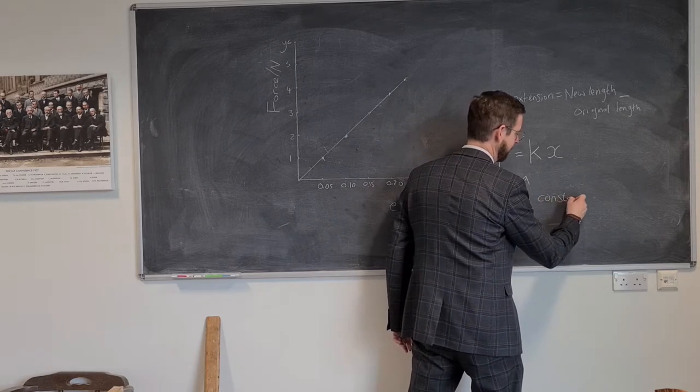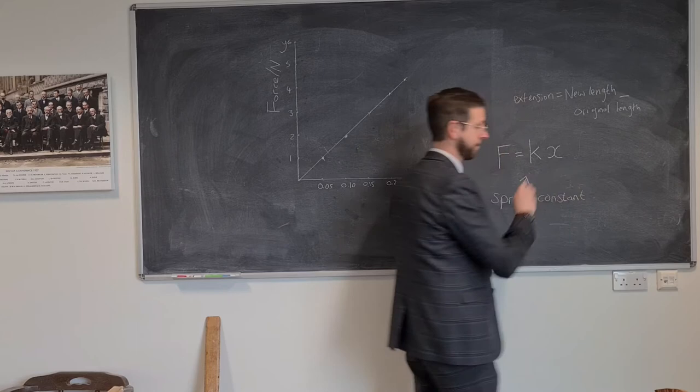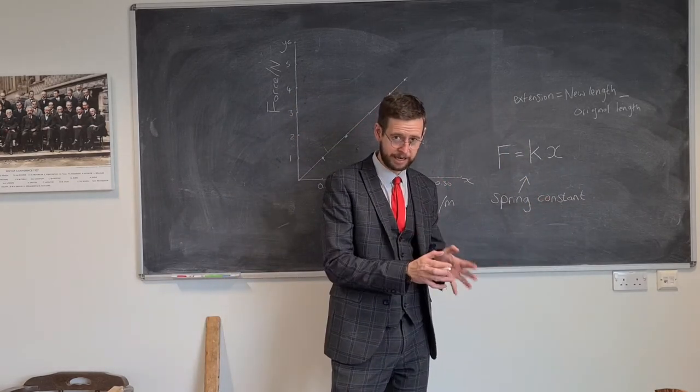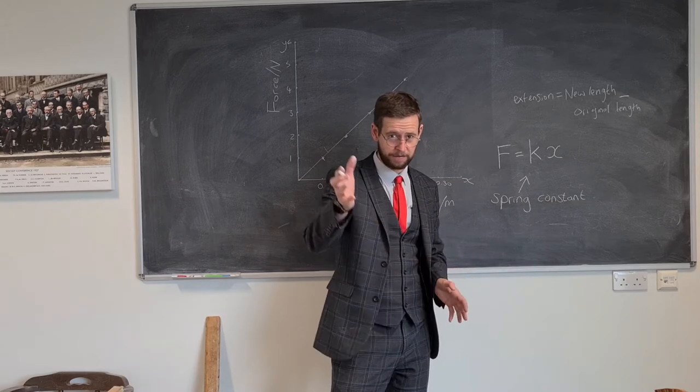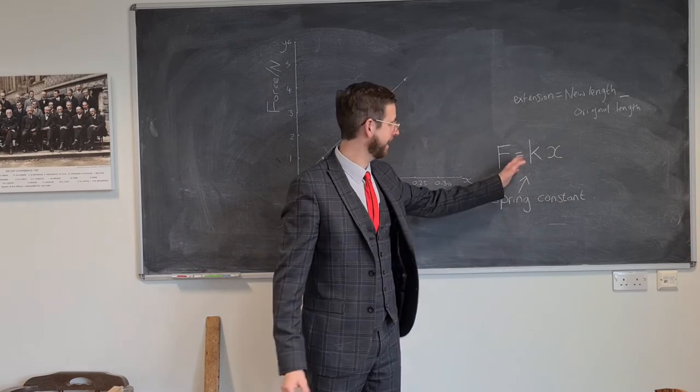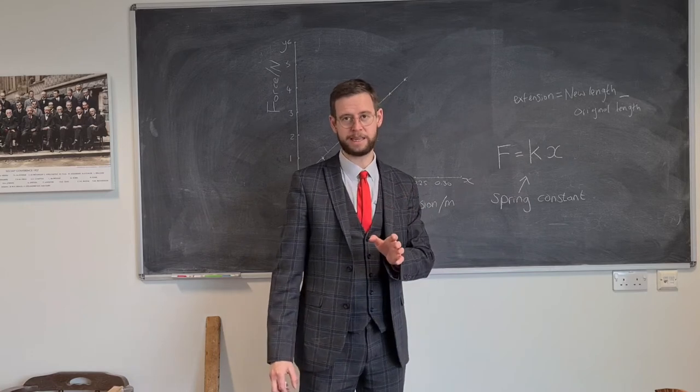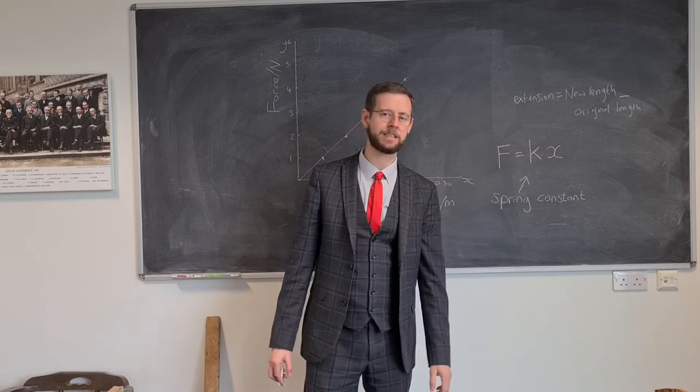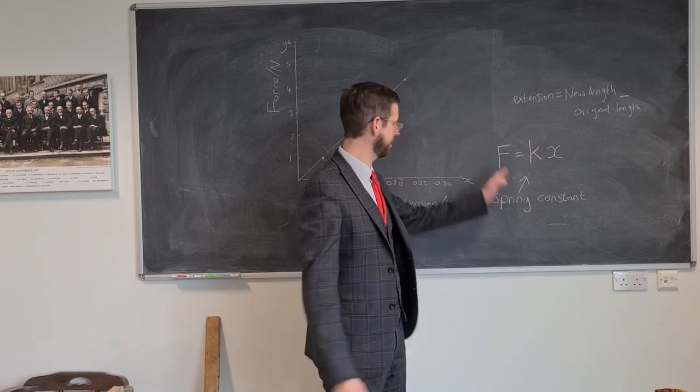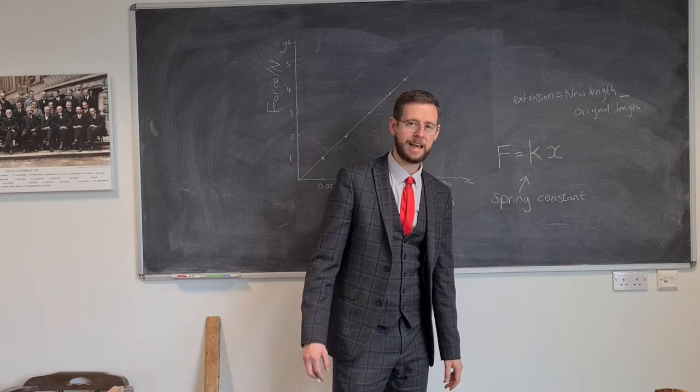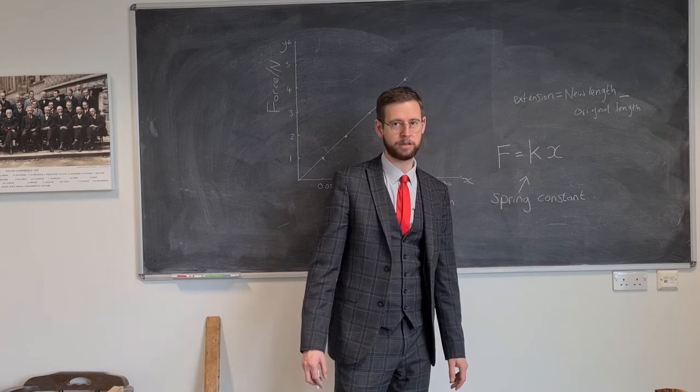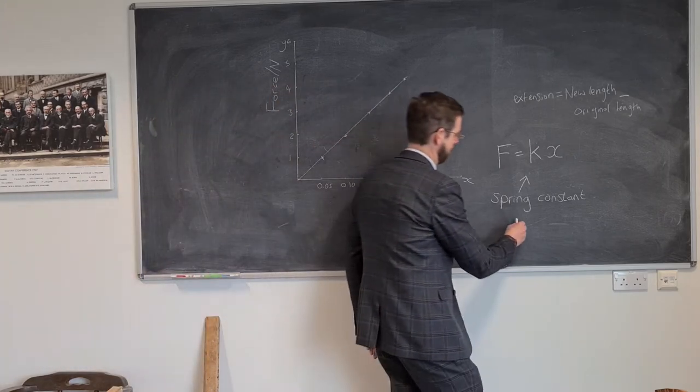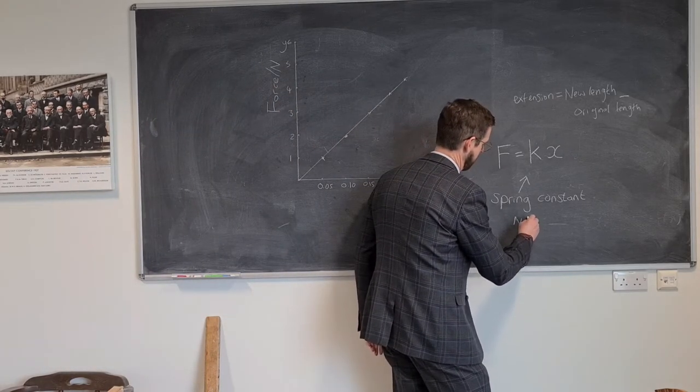And unlike the other quantities that appear in this formula, which can take any values, the spring constant is always the same number for a given spring. So for the apparatus that we just looked at, k in this equation would always be the same. And then we would change f, k stays the same, so x has to change. It means if we double f, then we're also going to see that x increases by the same proportion. So spring constant and units of that are newtons per meter.